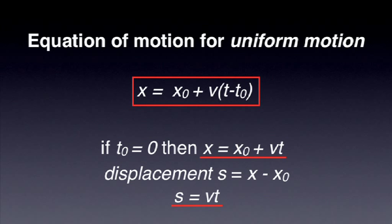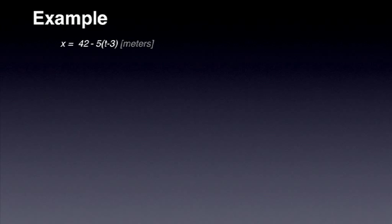Let's now consider a simple numerical example. The equation of motion of a moving car is x equals 42 minus 5 multiplied by t minus 3. This is in meters. Let's try to identify the main features of this motion. By writing the general equation describing a uniform motion, we can conclude the following. The initial position of the car is 42 meters. The velocity is minus 5 meters per second, which means that the car moves in what is considered to be the negative direction at 5 meters per second.